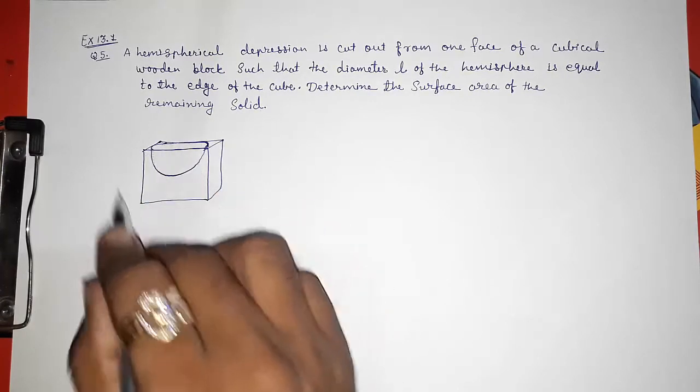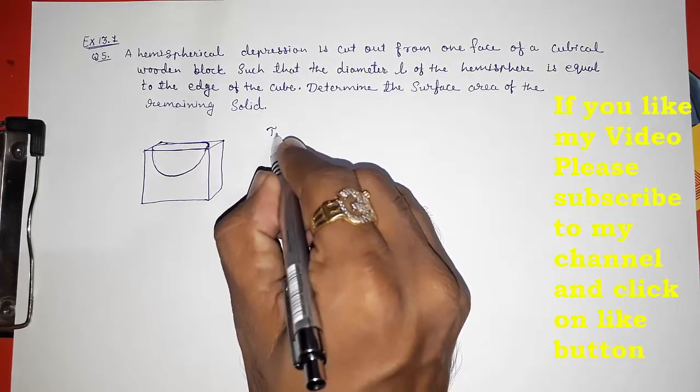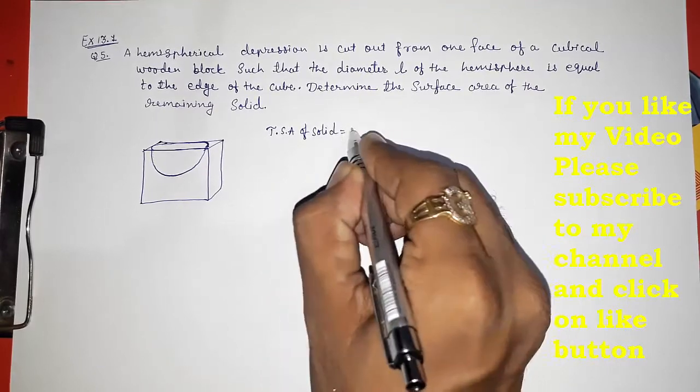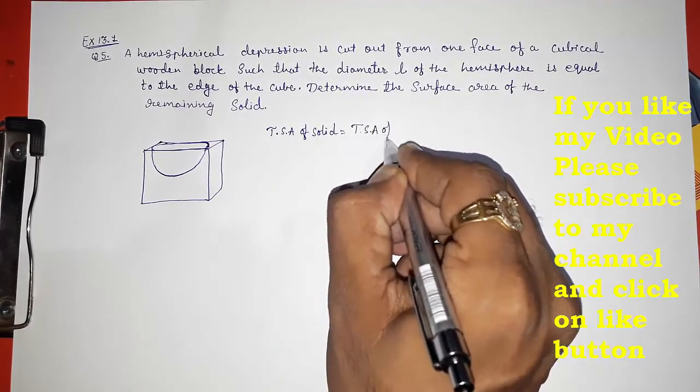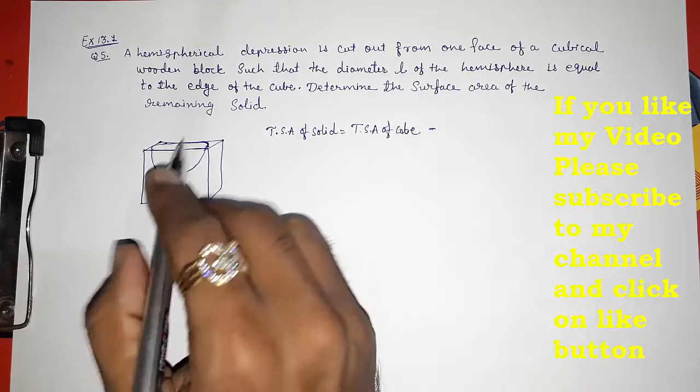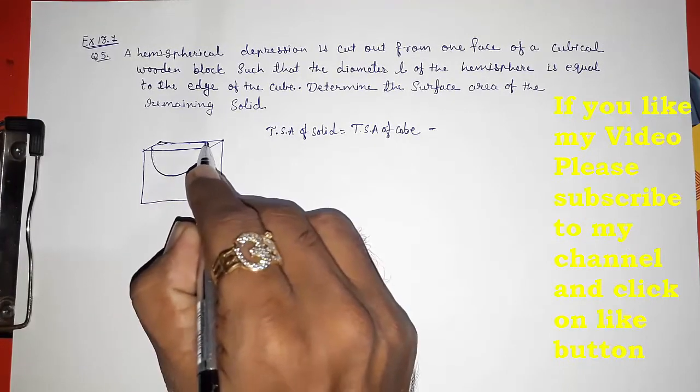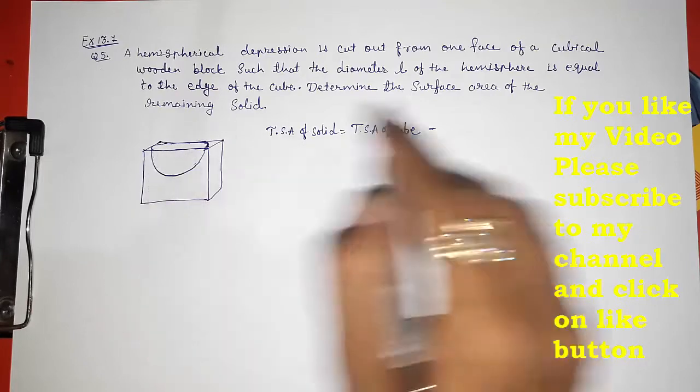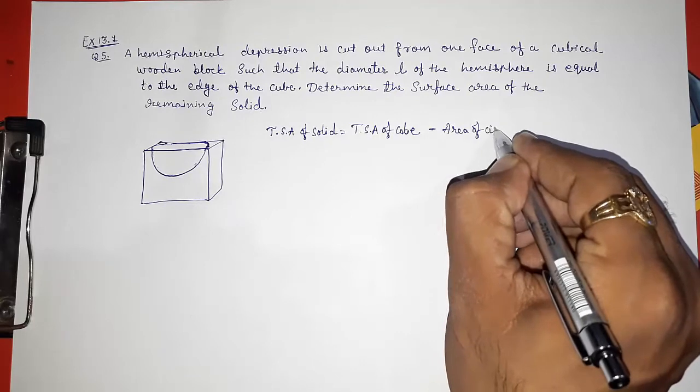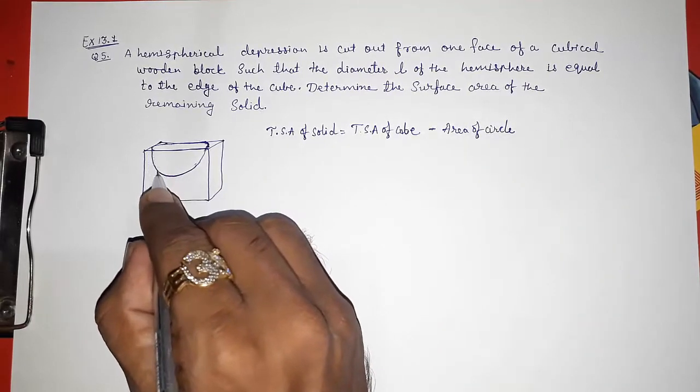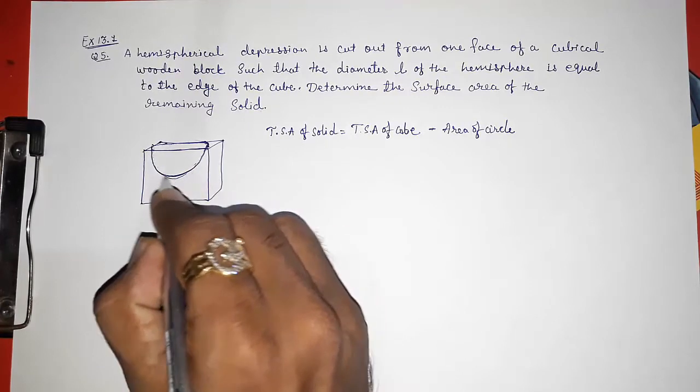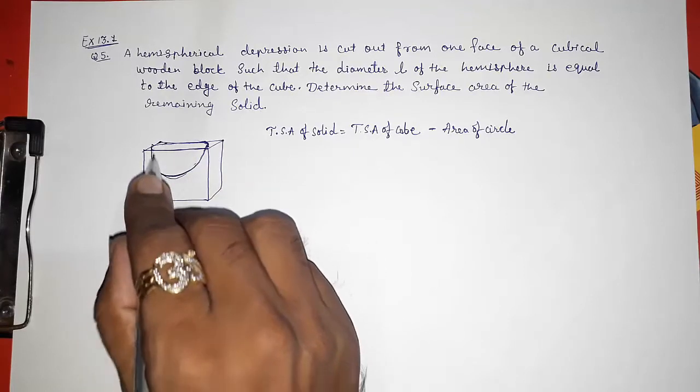So what we have to find is the total surface area of this remaining solid. TSA of this solid is equal to TSA of cube, which means all the sides minus this upper circle, because we had cut out from here. So we have to subtract this circle, minus area of circle. And now this hemispherical part will be the area inside that remaining cube, so now we have to add this area, plus CSA of hemisphere.